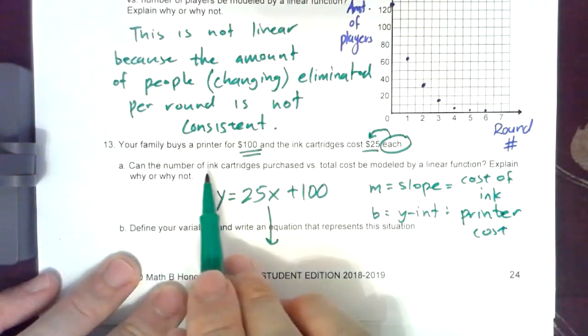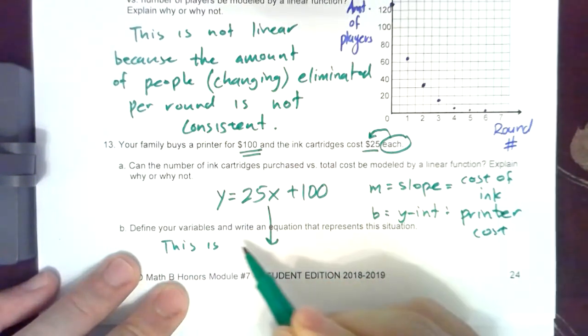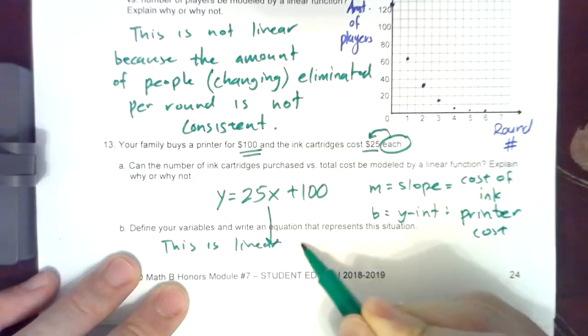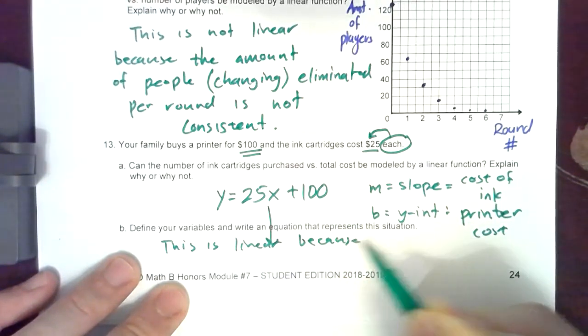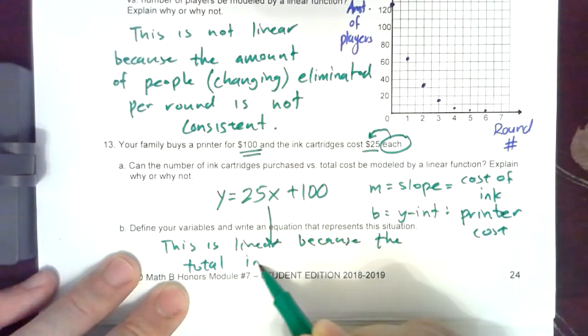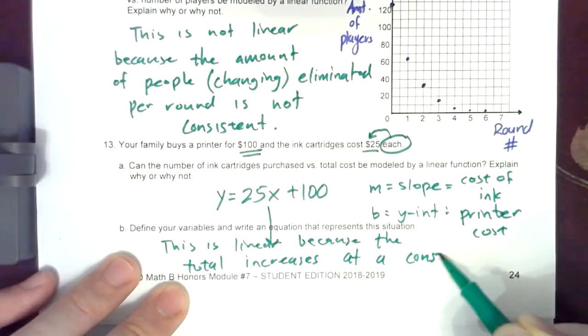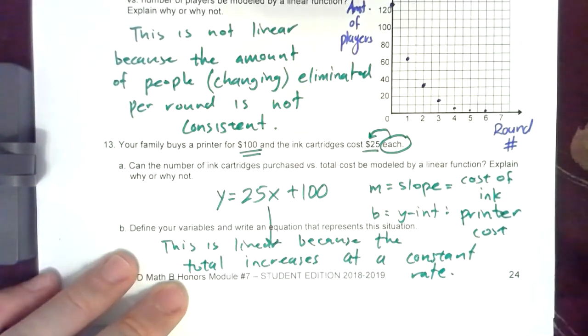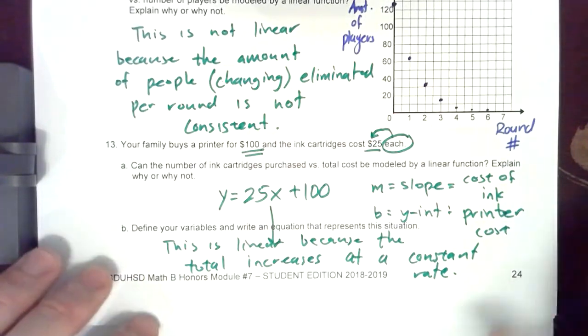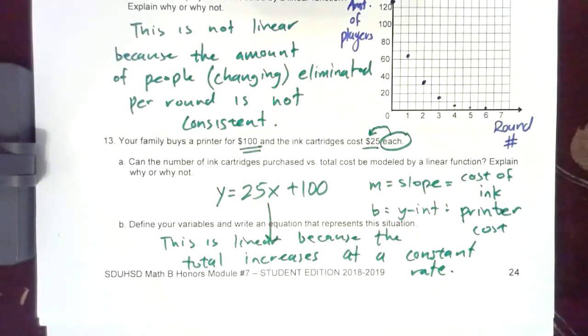So can they, yes. I guess this should have been here and I apologize, but it says can the number of ink cartridges purchased be modeled by a linear function. This is linear because the total cost increases at a constant rate. And it's really just dependent on the ink.